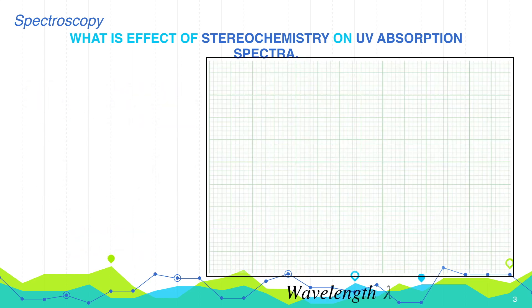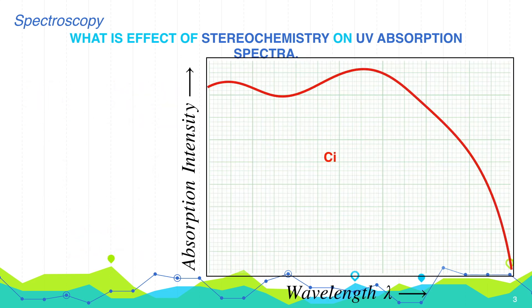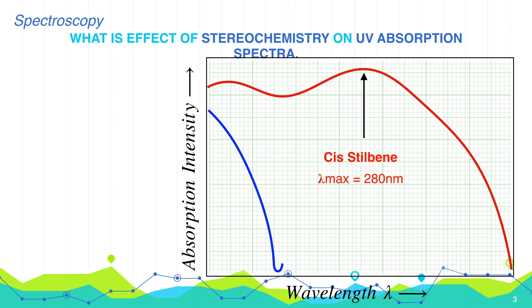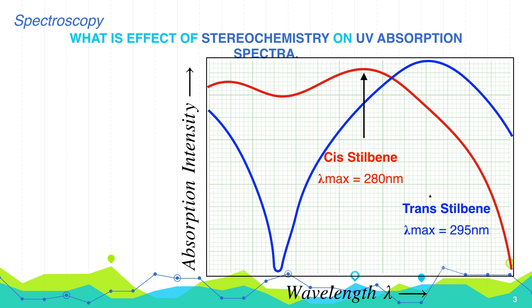The UV spectra of cis-stilbene and trans-stilbene are shown here. You can see that cis-stilbene shows a lambda max — the wavelength of maximum absorption — at 280 nanometers, while in the case of trans-stilbene it is 295 nanometers.